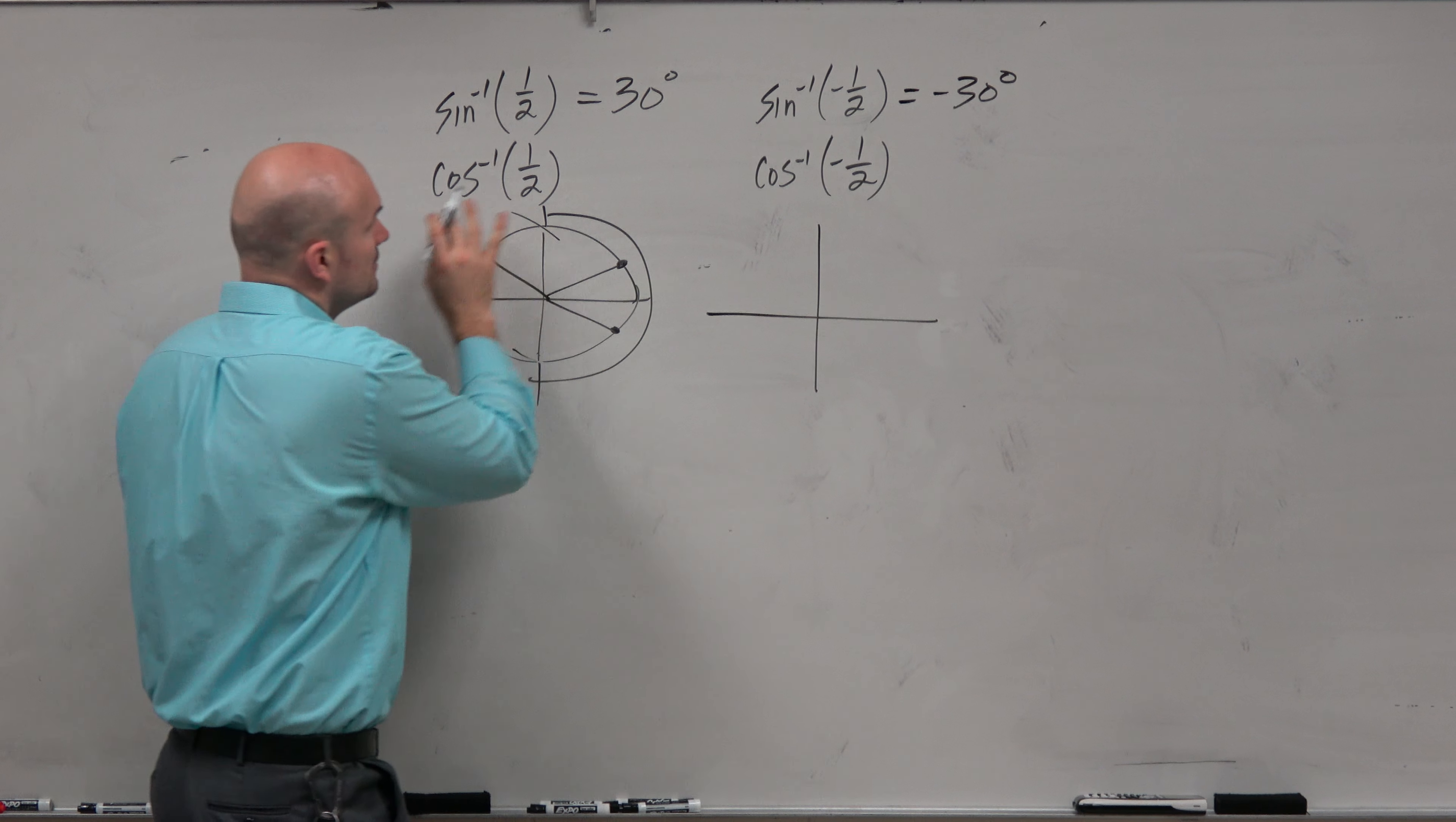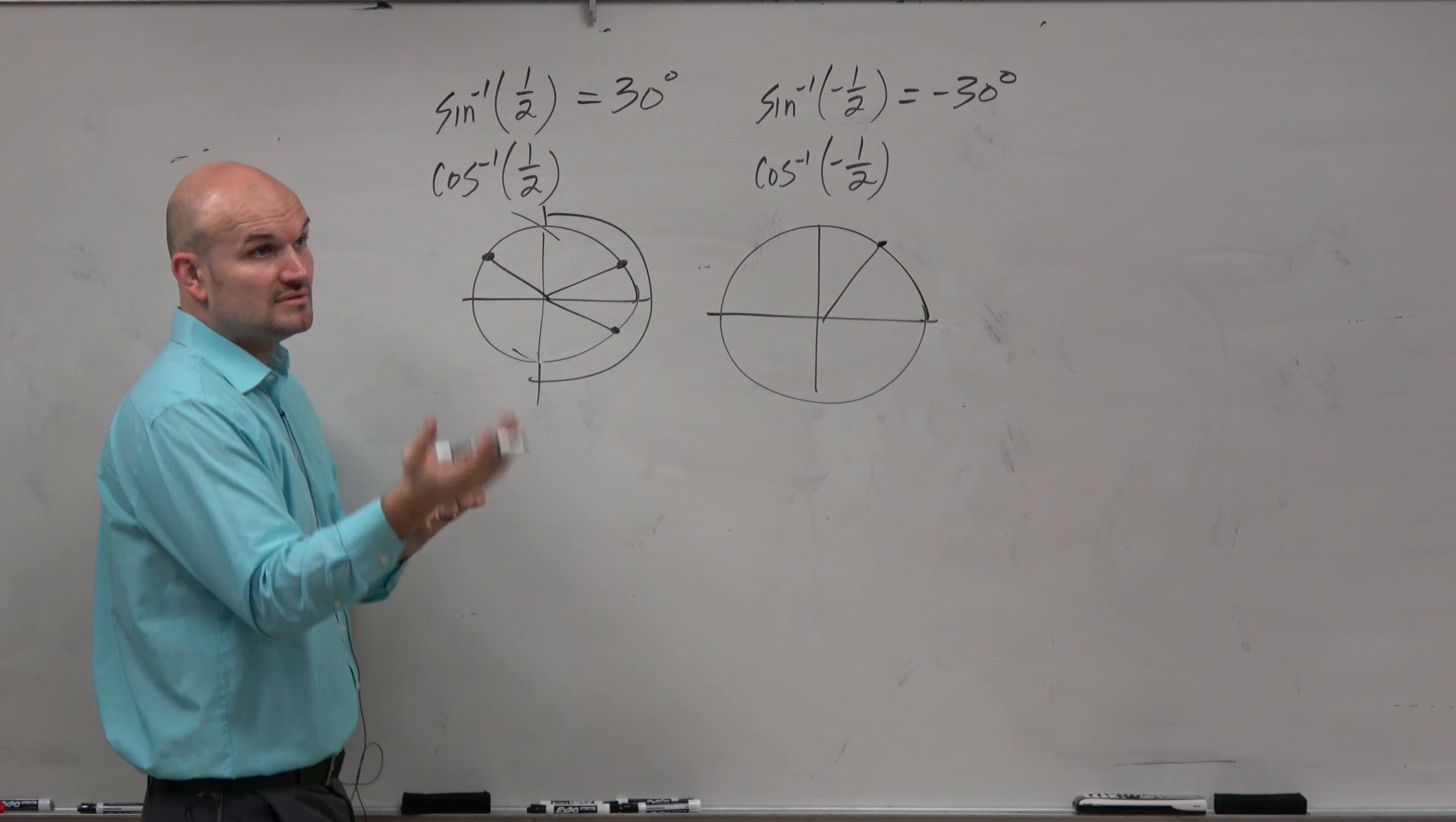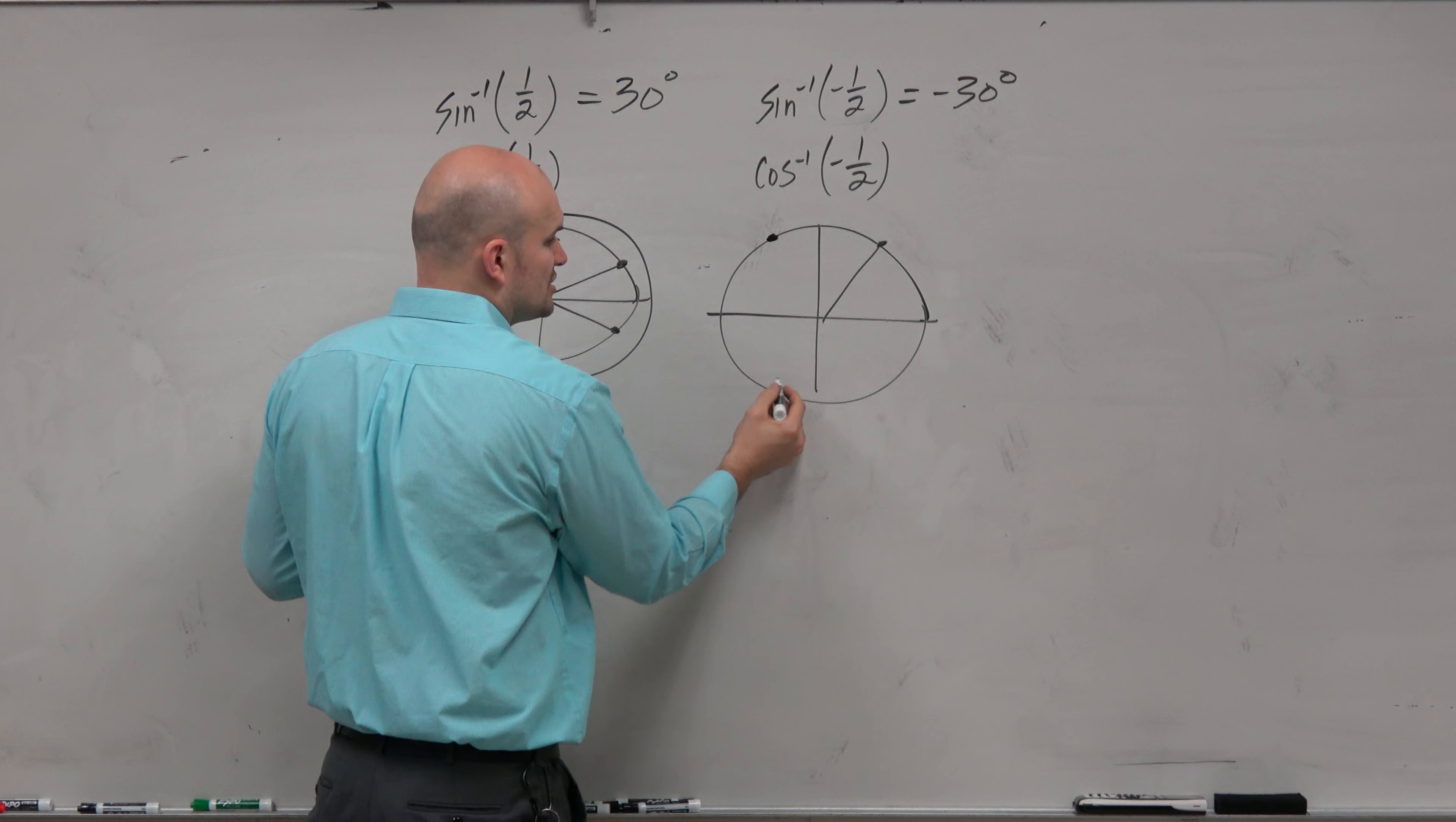Now to do cosine, we say cosine of 1 half. We say, oh, that was going to be pi over 3 or 60 degrees. And then negative, cosine is negative not in the fourth quadrant, but cosine is negative in the second and the third quadrant. So it's going to be one of these two.